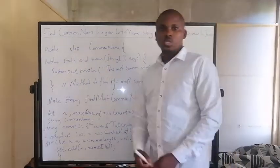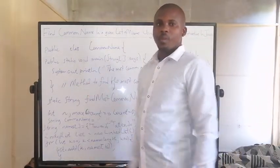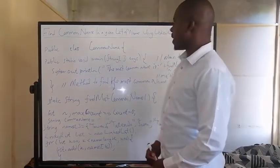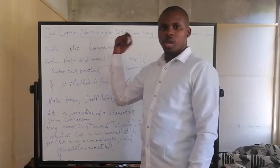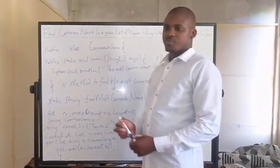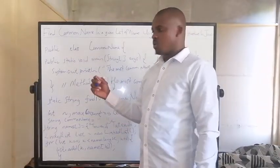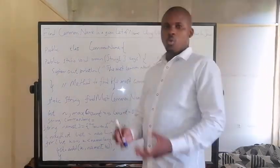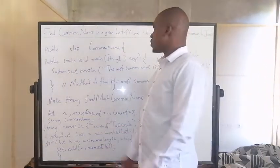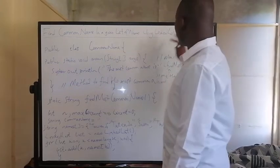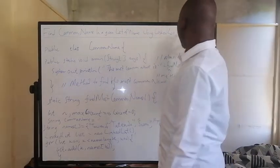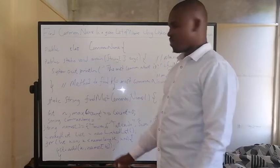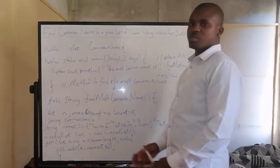In this video, I'm going to use the method that we've actually used on our previous tutorial where we're finding the most common number from a given list of numbers — finding the mode from a given list of numbers. But on this one, we're going to use the linked list data structure in Java to find out the common name from the pool of names that we have.